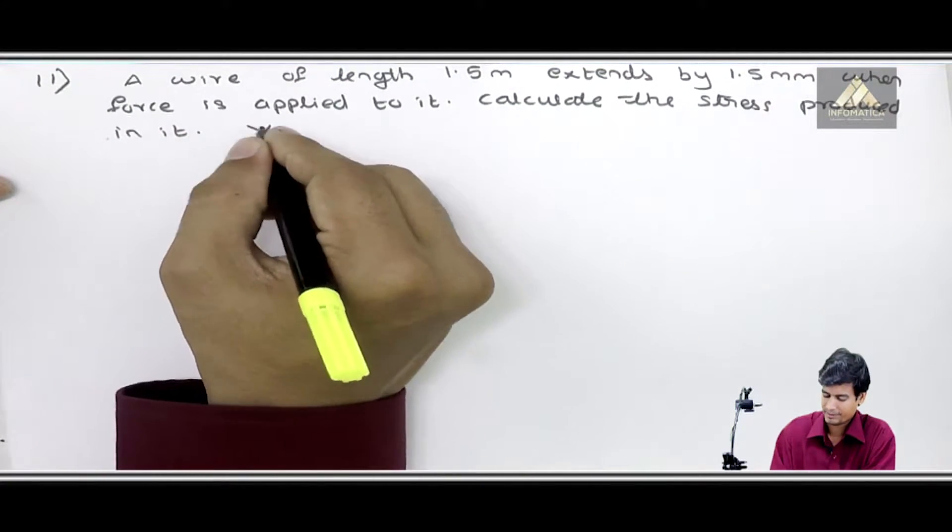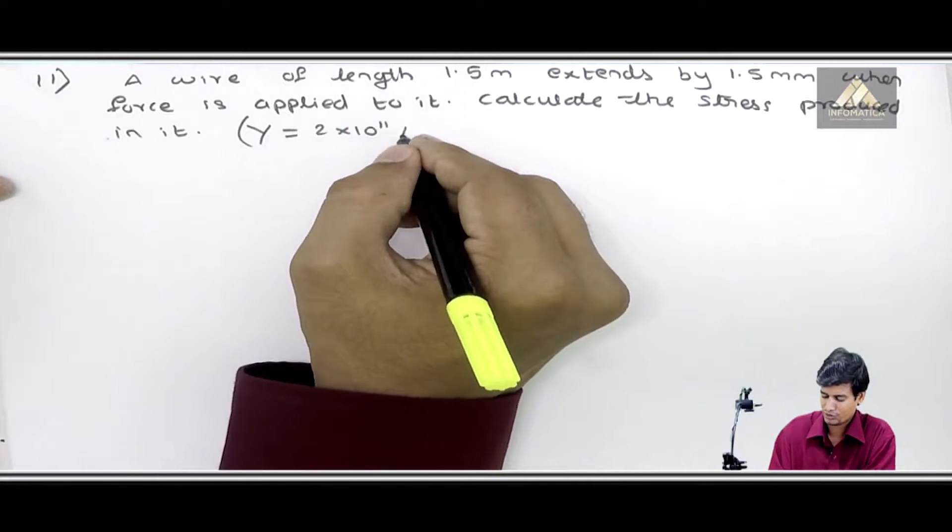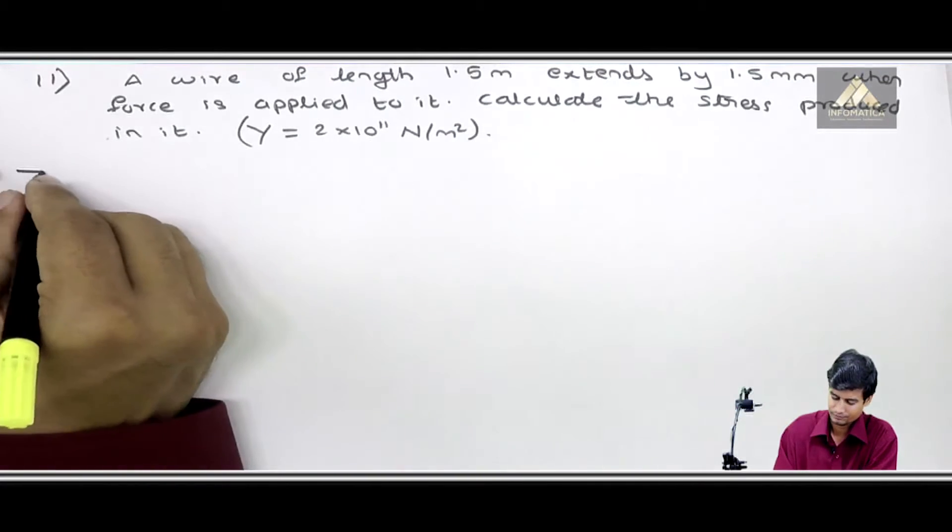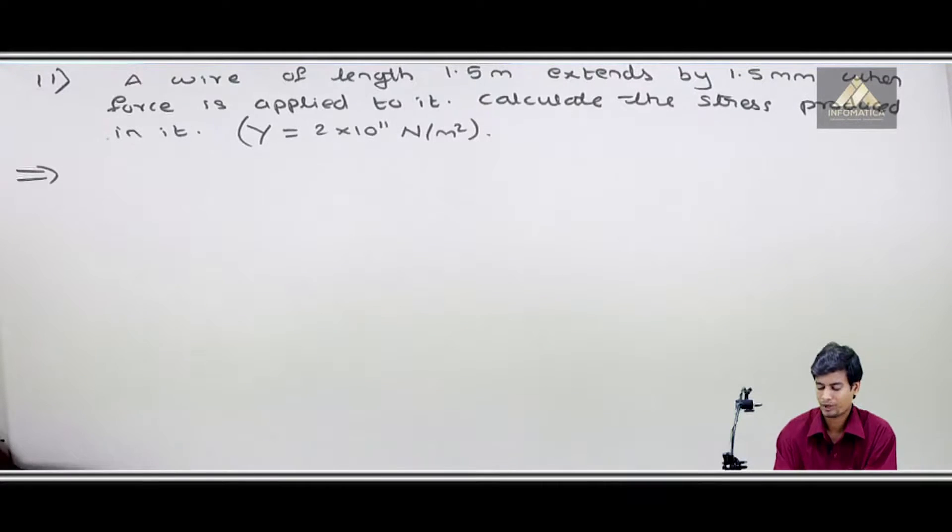Given: Young's modulus Y = 2×10¹¹ newton per meter square. The problem states: a wire of length 1.5 meter extends by 1.5 millimeter when force is applied to it, calculate the stress produced in it.